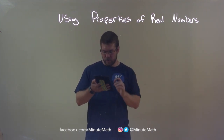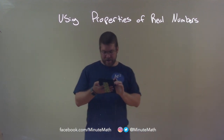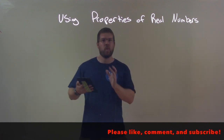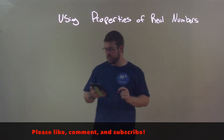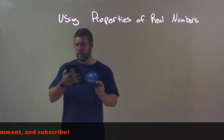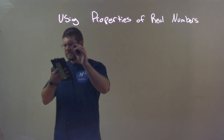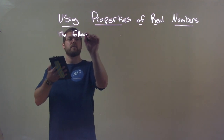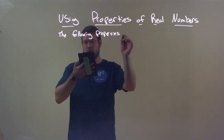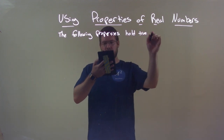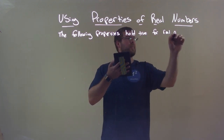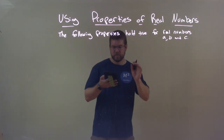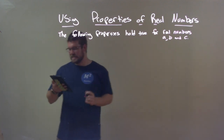You might know some of these properties you've heard before: the commutative, associative, distributive property, identity, and inverse properties. We're going to make a little chart here showing what each one is. These properties hold true for real numbers A, B, and C.